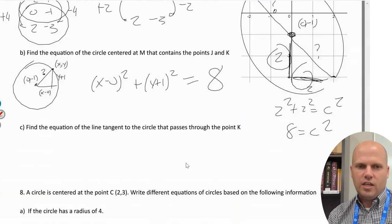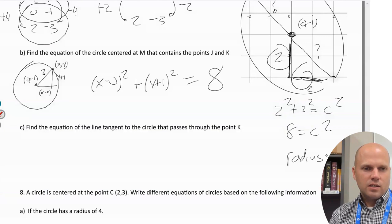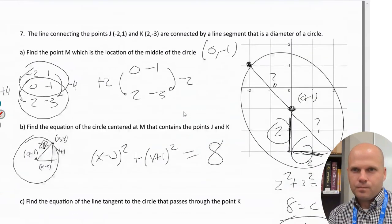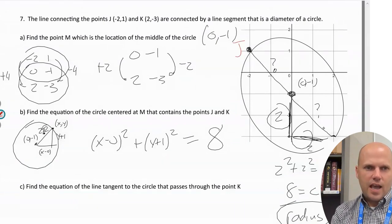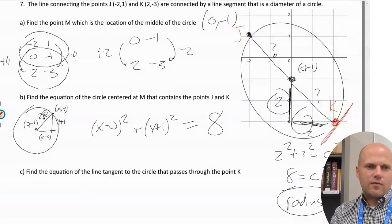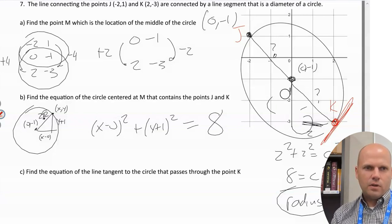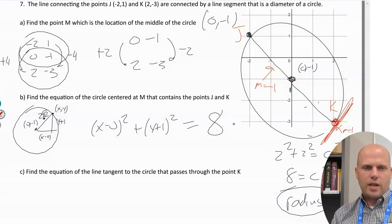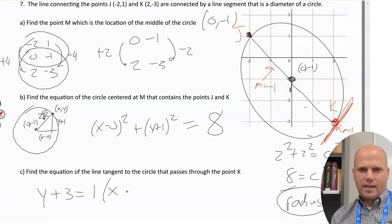Important distinction: if asked for the radius, the answer is √8 or 2√2 — that's how long the radius is. However, for the circle equation, c² = 8 is what goes on the right side. Find the tangent at point K(2,-3): the slope of the radius from M(0,-1) to K(2,-3) is -1. The tangent must have opposite reciprocal slope = 1. Using K: y + 3 = 1(x - 2).